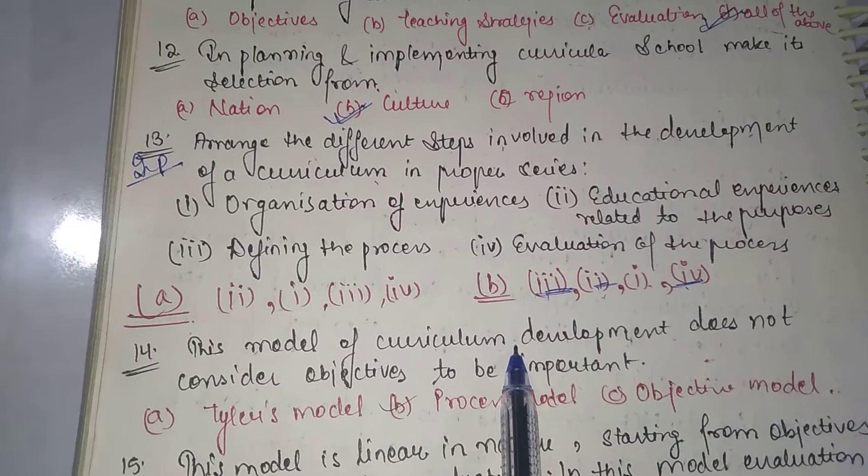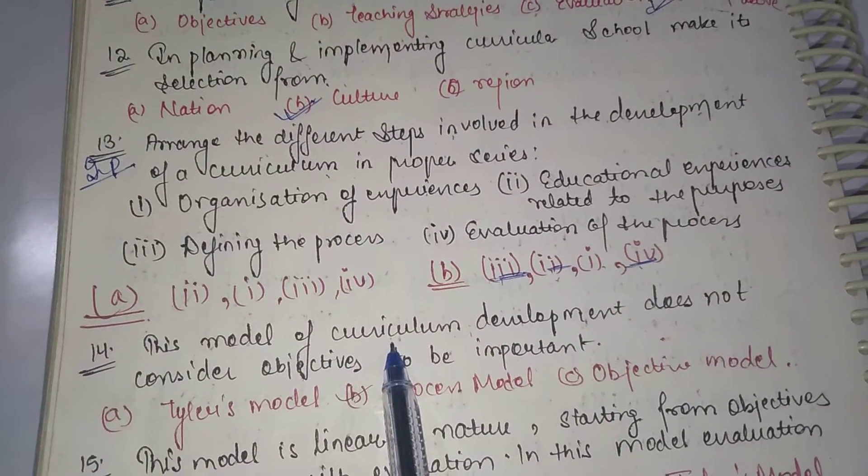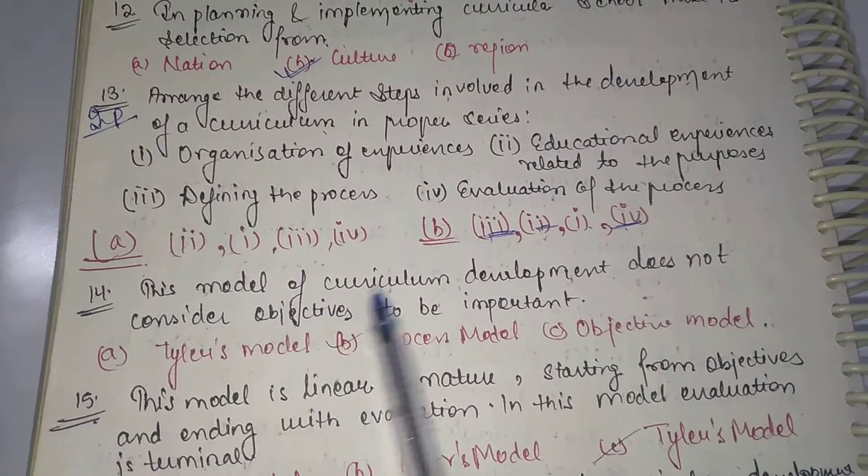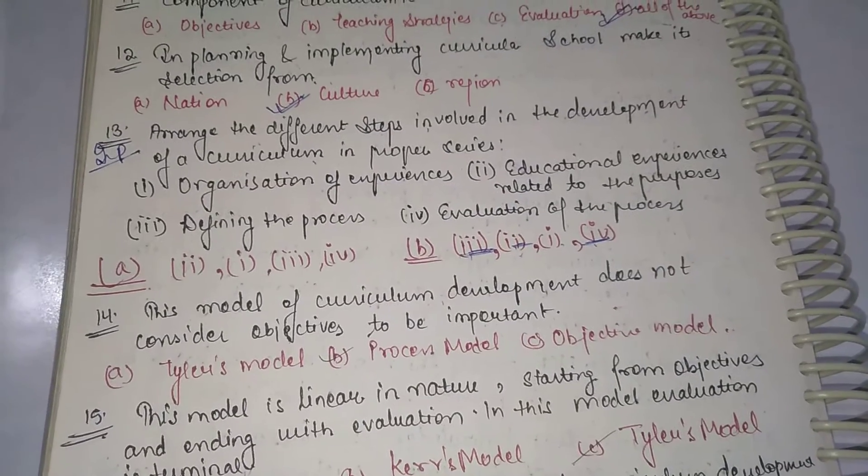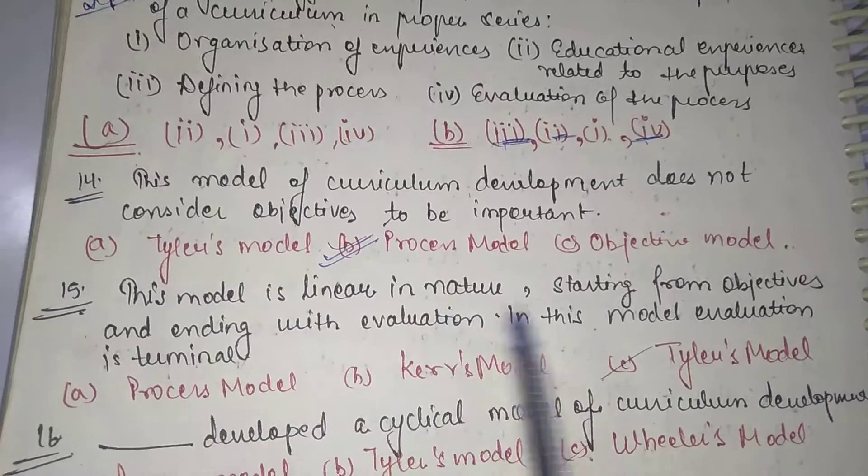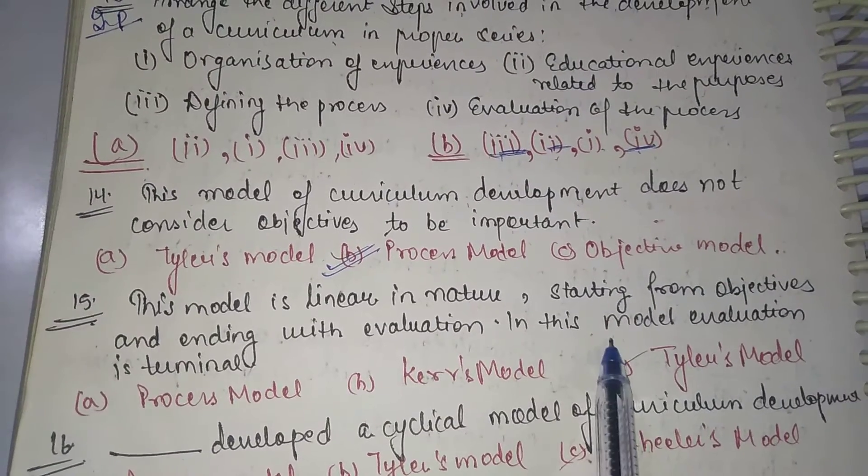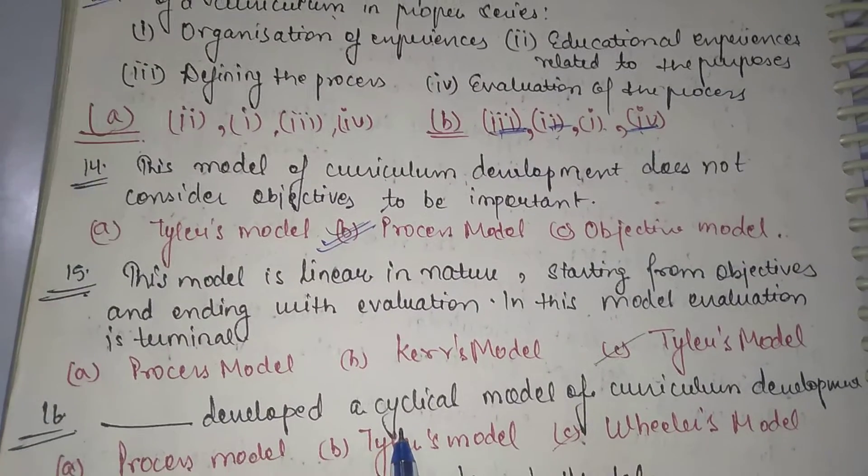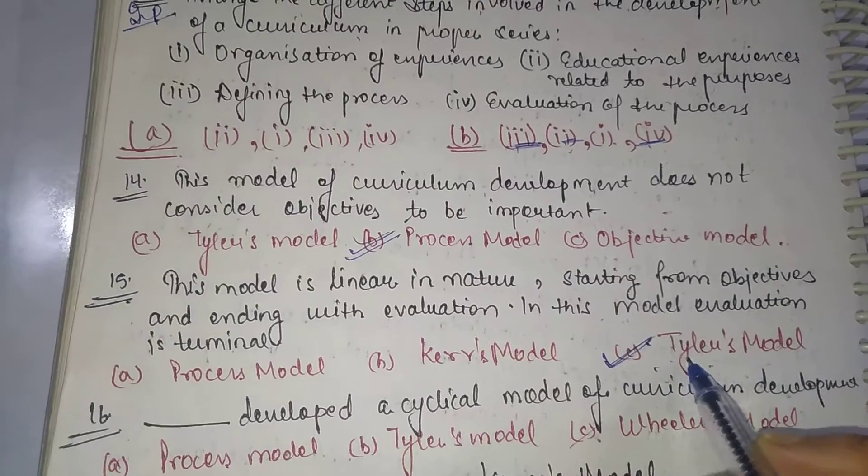This model of curriculum development does not consider objectives to be important. That model is process model. The next question is: This model is linear in nature, that means it starts from objectives and ends with evaluation. Evaluation is terminal, means your last step will be evaluation. This is in the Tyler's model. T for Tyler and T for Terminal.